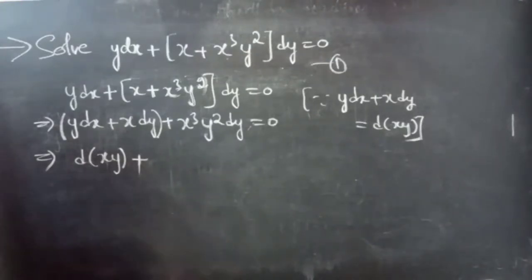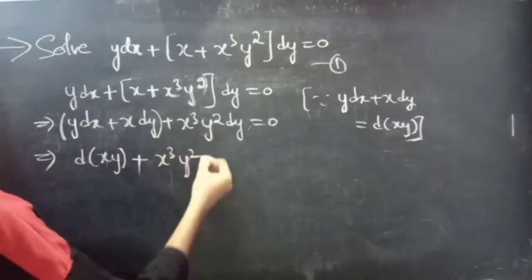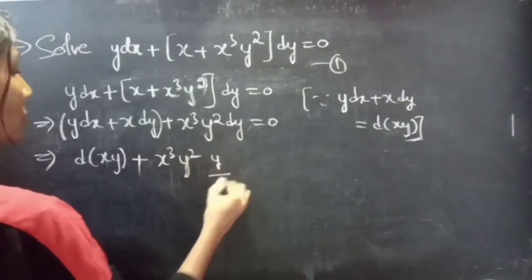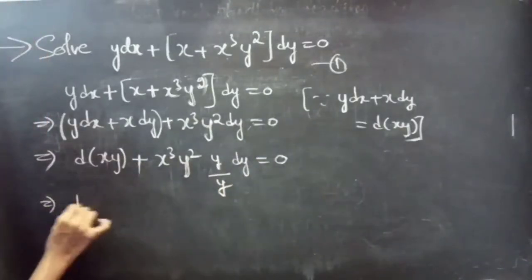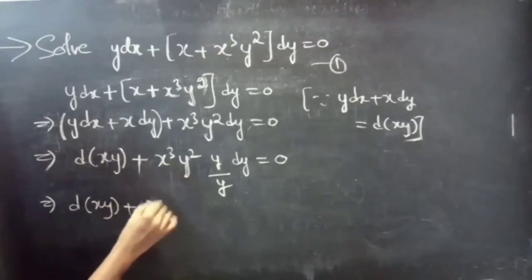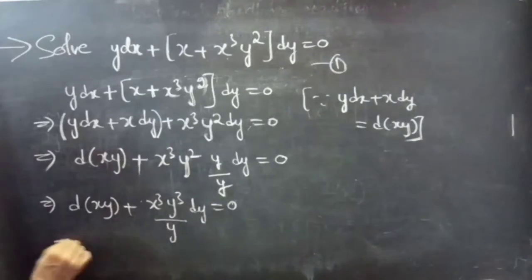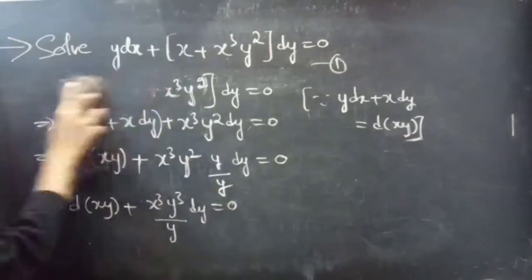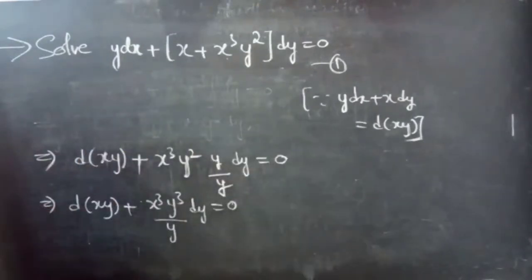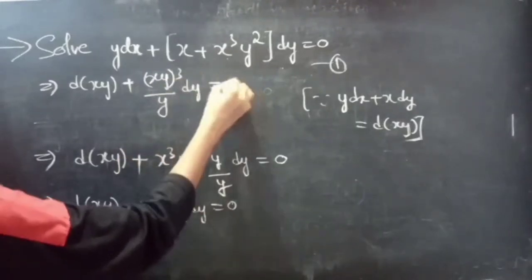We will eliminate (xy) cubed from the second term by using the integrating factor 1/(xy)³. In order to get one y in the second term, we will multiply and divide by y. Then we have d(xy) plus x cubed times y squared times y, which is y cubed, divided by y, times dy equals to 0. This becomes d(xy) plus (xy)³ divided by y times dy equals to 0.